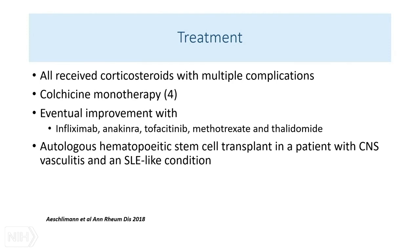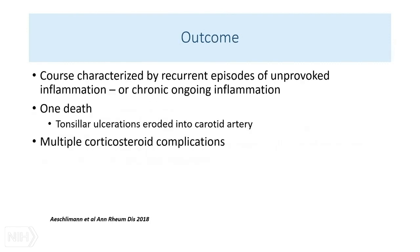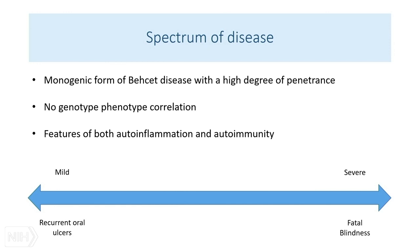In terms of treatment, there is no magic bullet. All patients received steroids, which were associated with multiple complications from long-term high-dose corticosteroid use. Four patients got by with just colchicine. A number eventually improved on a combination of biologic treatments, non-biologic DMARDs, and thalidomide. In one patient — the one with CNS vasculitis who initially looked like lupus — a hematopoietic stem cell transplant was performed. Outcomes in the first 16 patients included recurrent episodes of unprovoked inflammation or chronic ongoing disease. There was one death: a patient with horrible tonsillar ulcerations that eroded into the carotid artery, causing fatal bleeding.